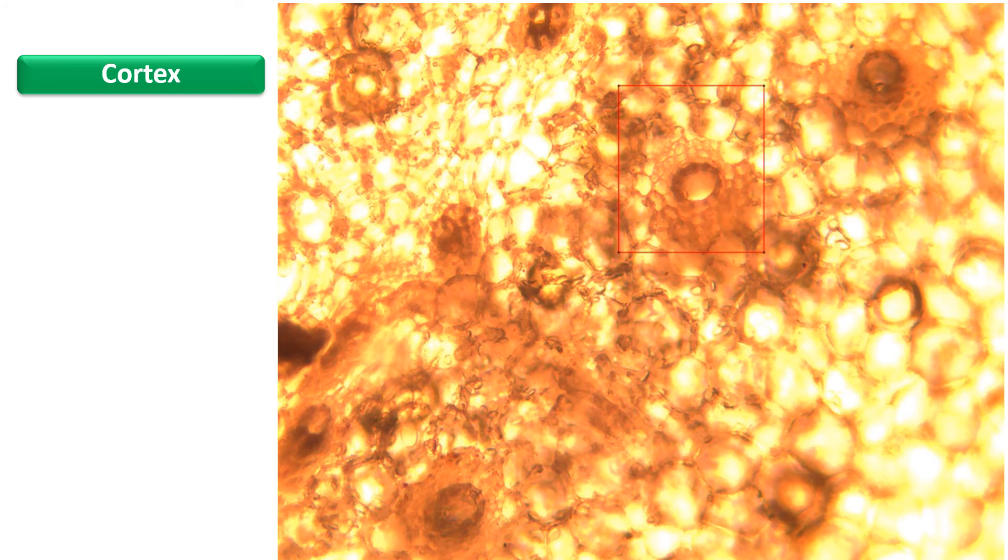As far as the cortex is concerned, the cortex has xylem vessels, numerous starch grains, and oleoresin cells. You can find numerous oleoresin cells within the cortex, which secrete oleoresin, including shogun oil and ginger oil.